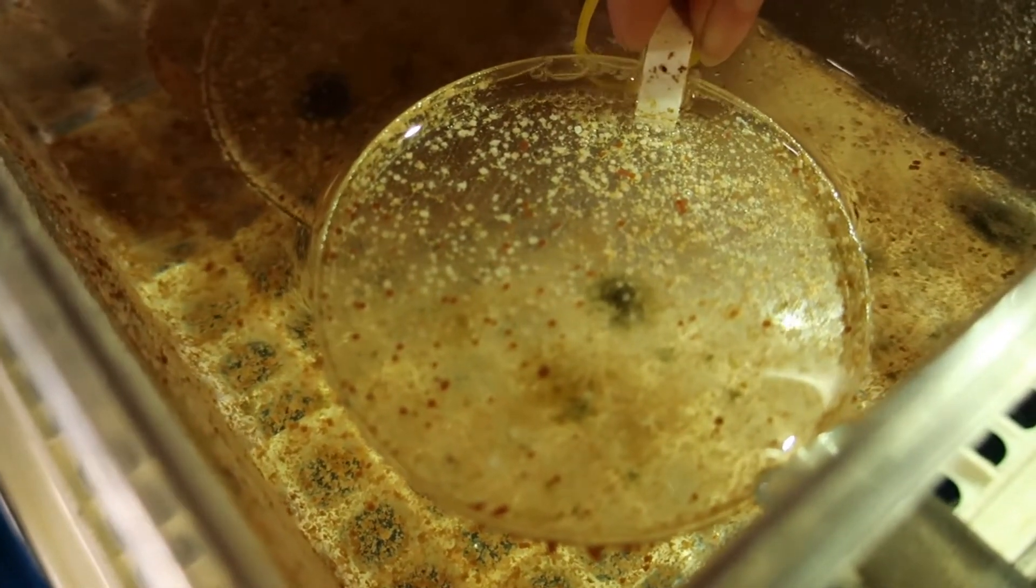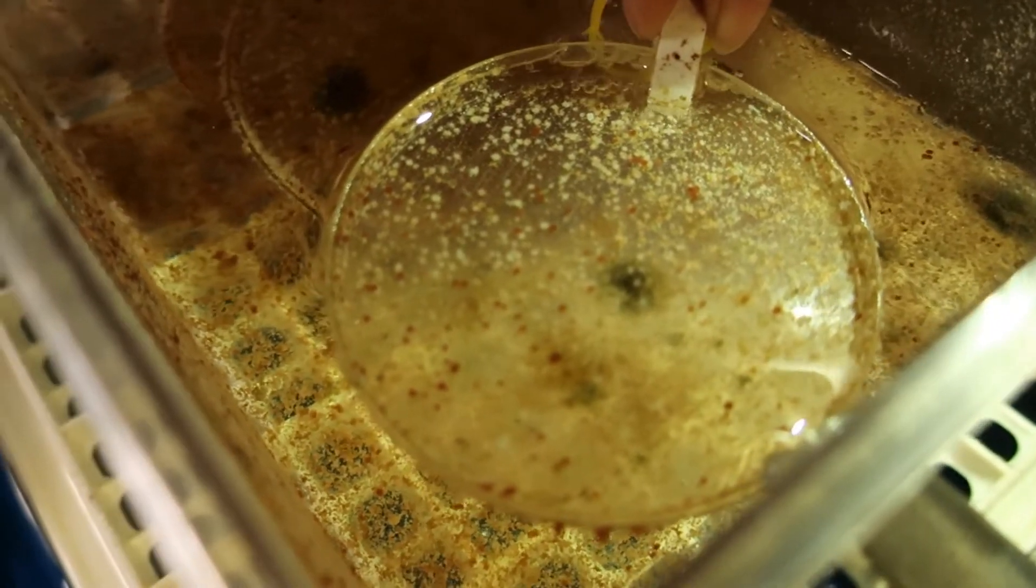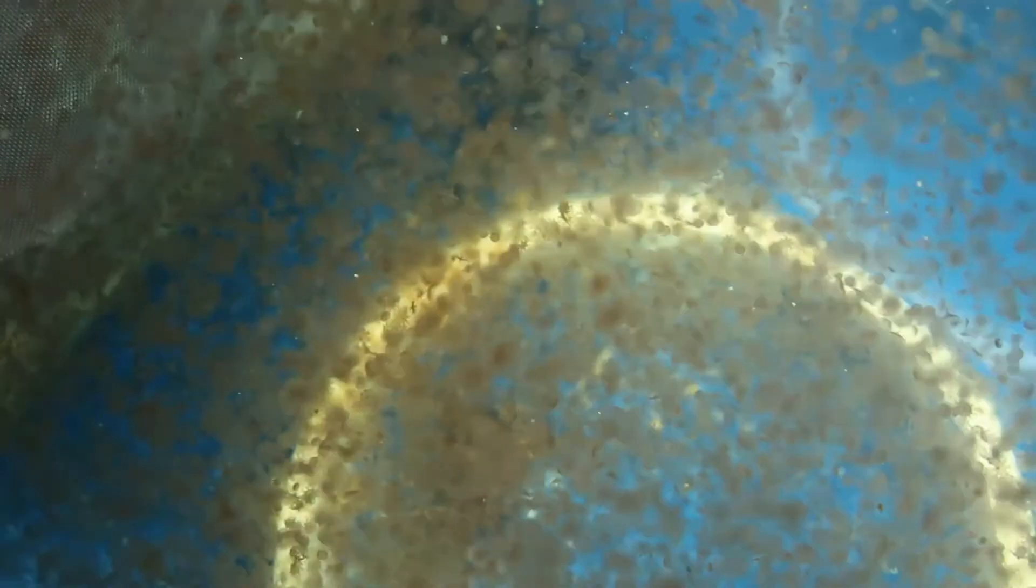So those polyps grow and bud and reproduce and cover everything, and eventually they get to a stage where they decide it's time to move on and become a free form that's called strobilation. And that's when they go back to being a pre-swimming thing.